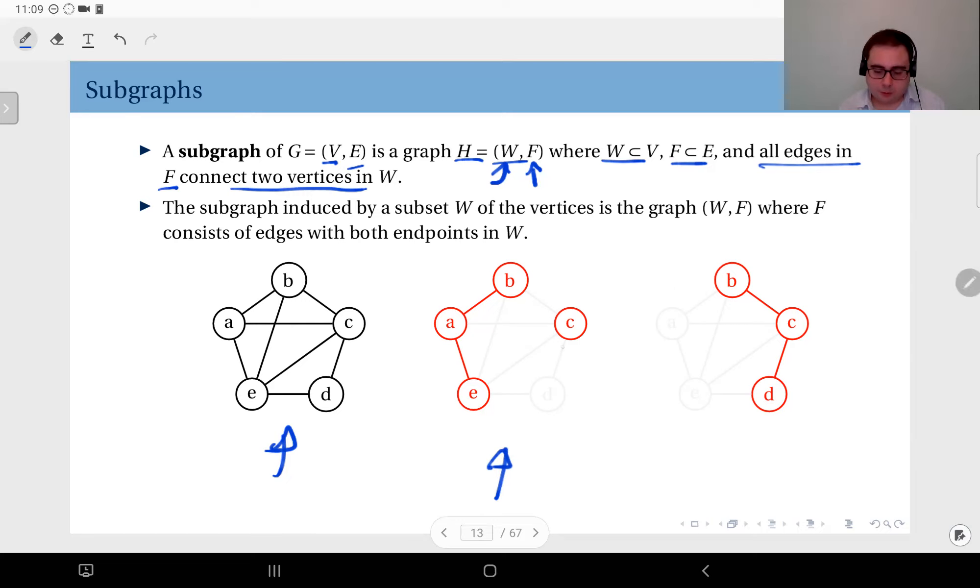Another concept regarding a subgraph is the subgraph induced by a subset W of the vertices in the graph, where F consists of edges with both endpoints in W. So if you specify just the subset consisting of the vertices of the subgraph, for instance in this example let's say we select b, c, and d, the subgraph induced by these vertices b, c, and d is given here. You simply find this by selecting the edges that are incident to a pair of vertices in this subset only.